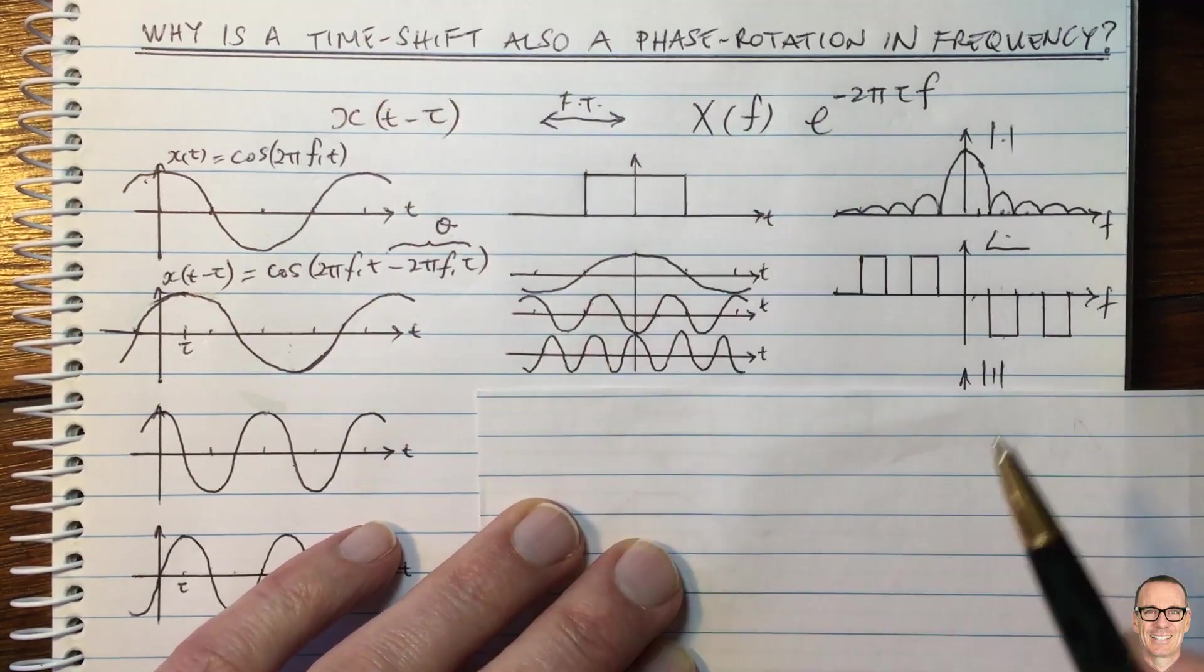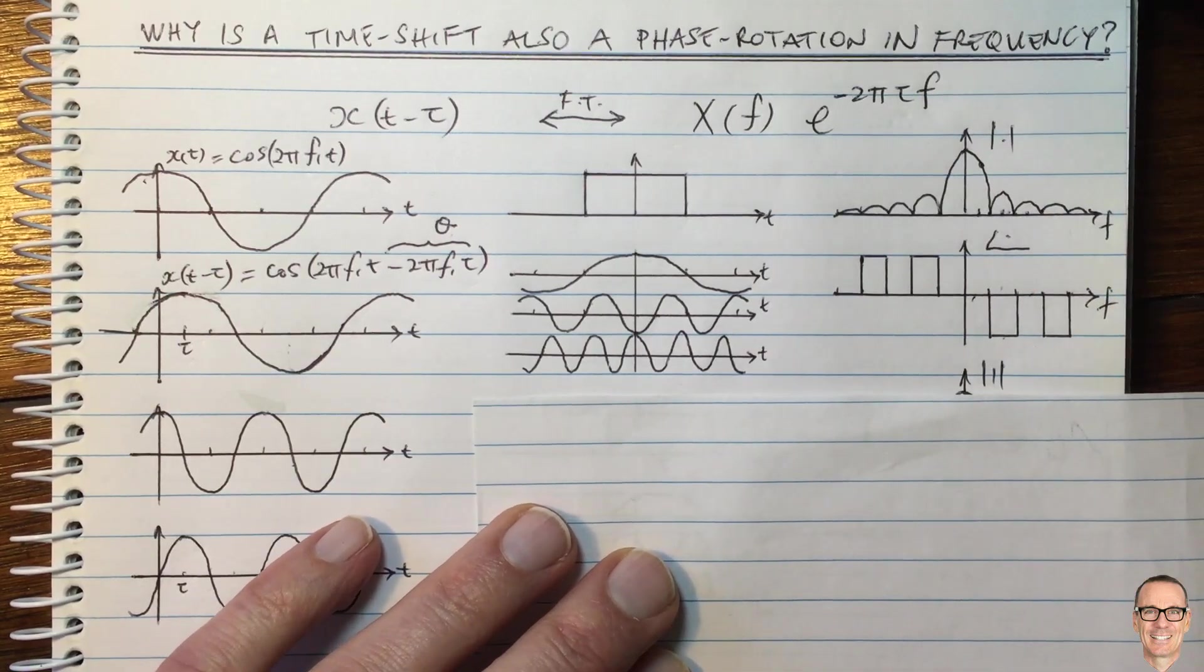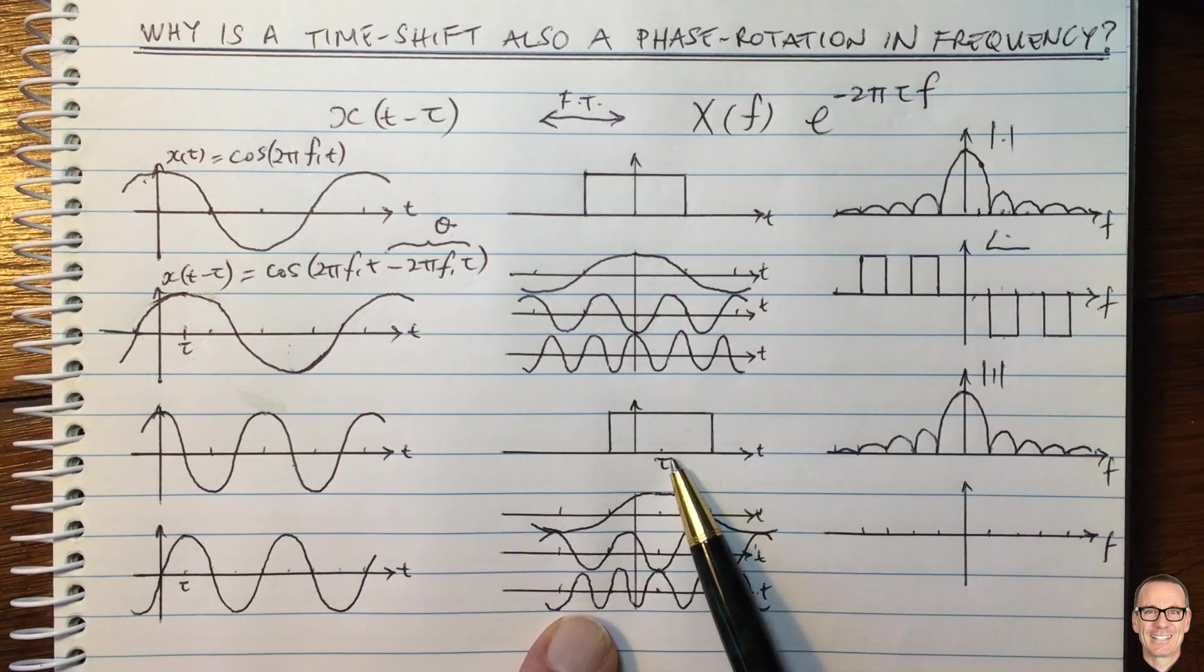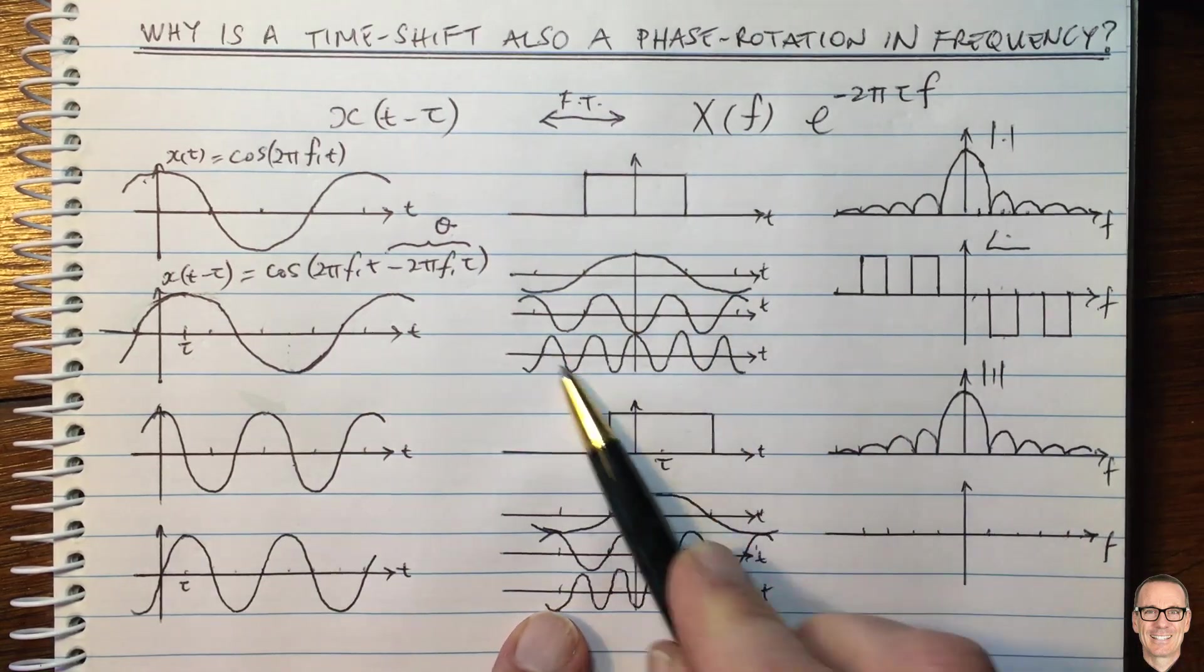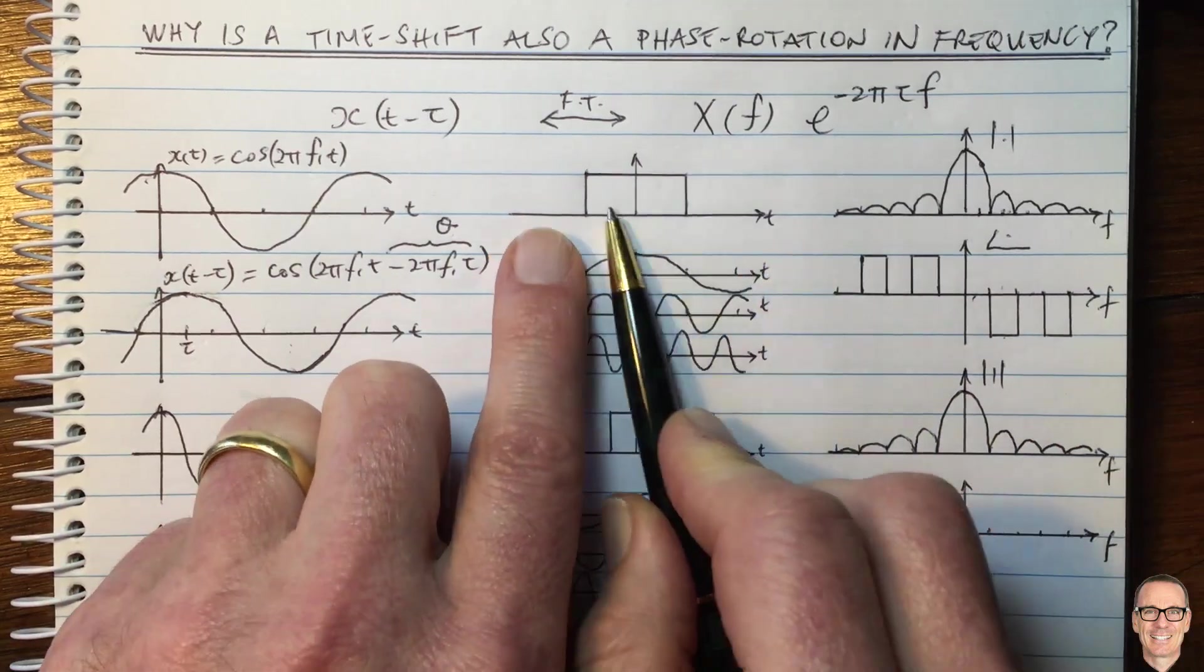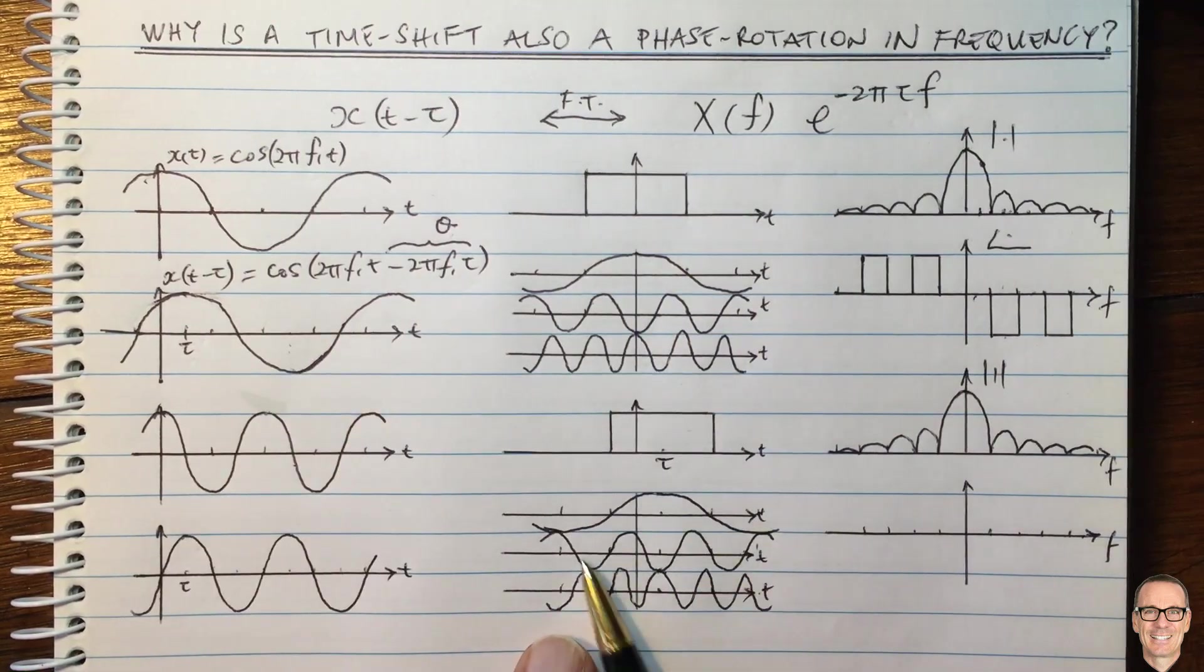OK, so what is the effect of a time shift? And let's see what happens in the phase. So here now we've got a time shifted rect function, time shifted by Tor. And of course, all of the frequency component waveforms all just shift exactly the same. We're shifting this waveform, they're all its components shift. That's what I'm showing here.